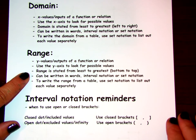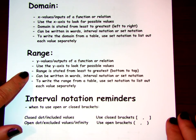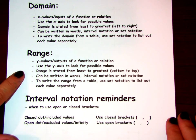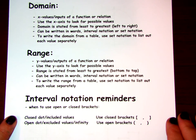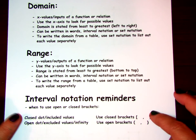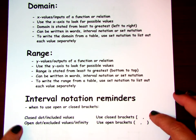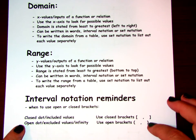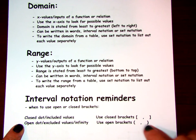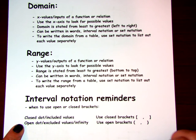The range is going to be the y values or outputs of a function or a relation, using the y-axis to look for the possible values. It's also going to be stated from least to greatest, which on the graph will be bottom to top. There are also multiple ways we can write that answer. As a quick reminder for interval notation, we use closed brackets for a closed dot or included value, and open brackets for open dots, excluded values, or infinity symbols.